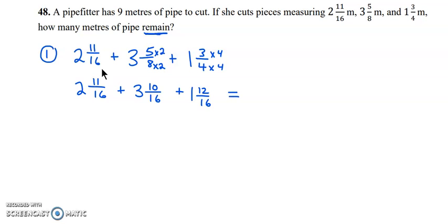So this is going to be 10/16 and 12/16. We can add our whole numbers, 2 plus 3 plus 1 is 6, and we can add our numerators, 11 plus 10 is 21, plus 12 is 33, over 16. We have an improper fraction here that needs to change to a mixed number, and we can add on to the 6. So let's change that, 16 into 33 goes 2 times with 1 left over out of 16. We're going to add that to the 6, giving us a total of 8 and 1/16 of a meter.